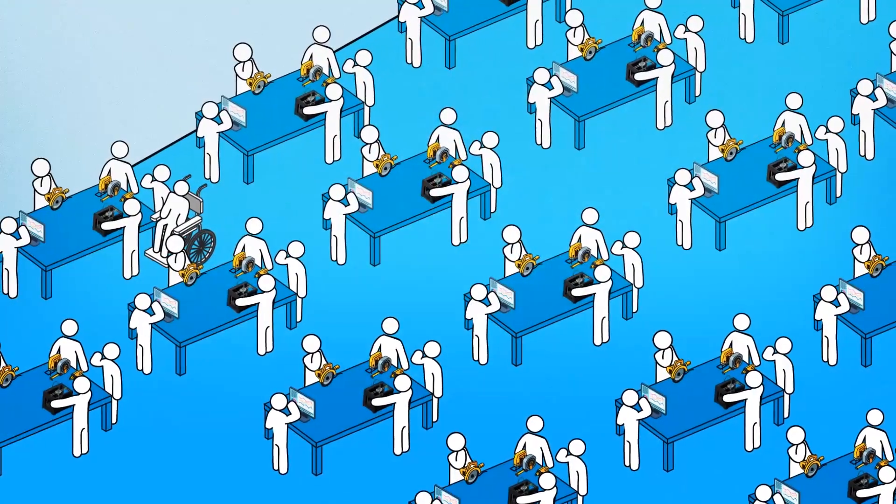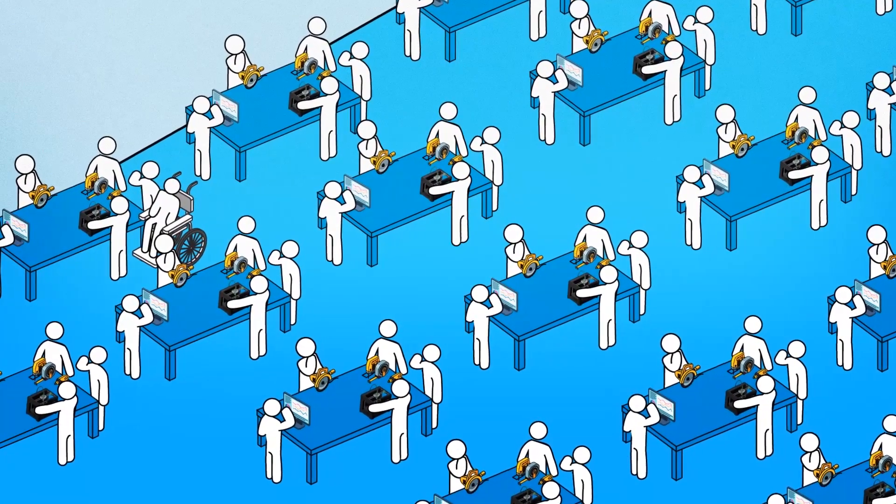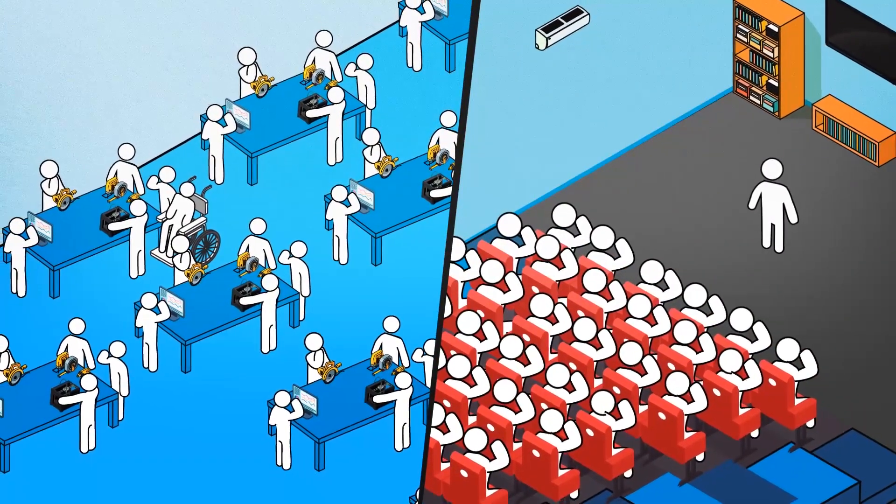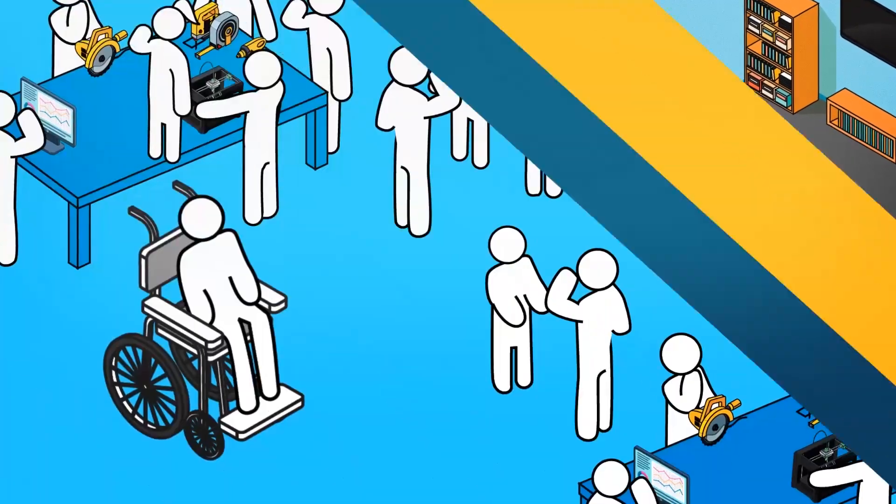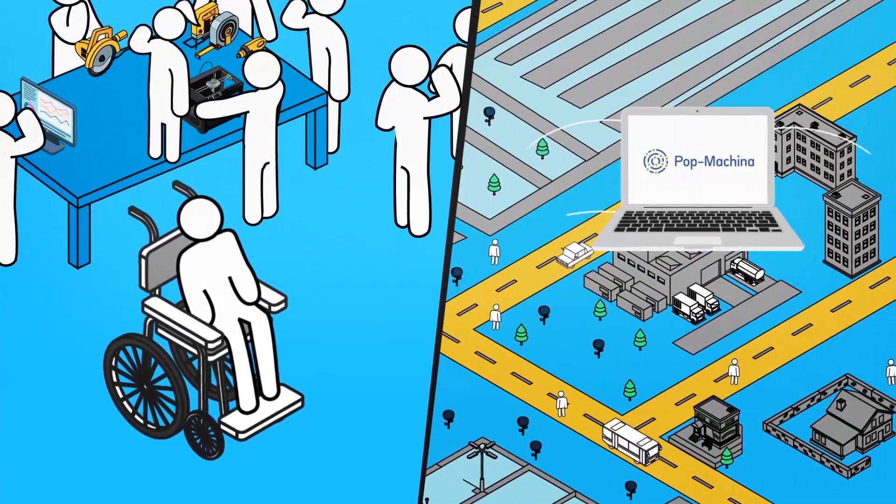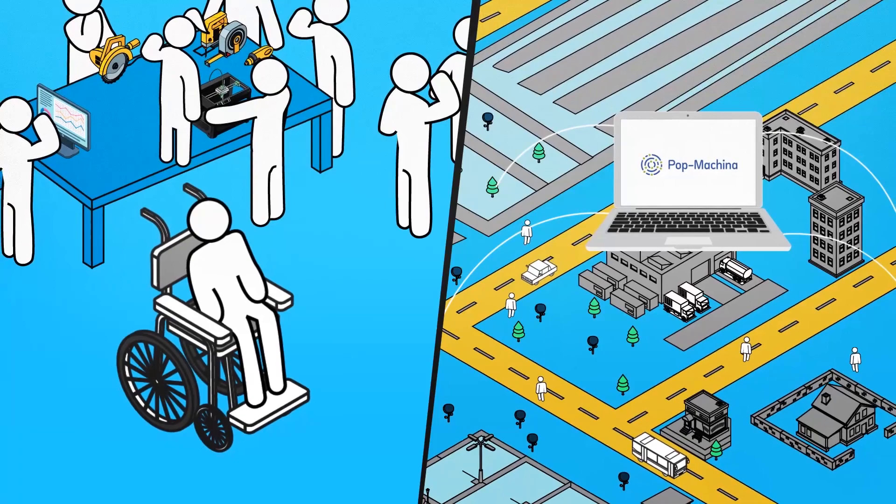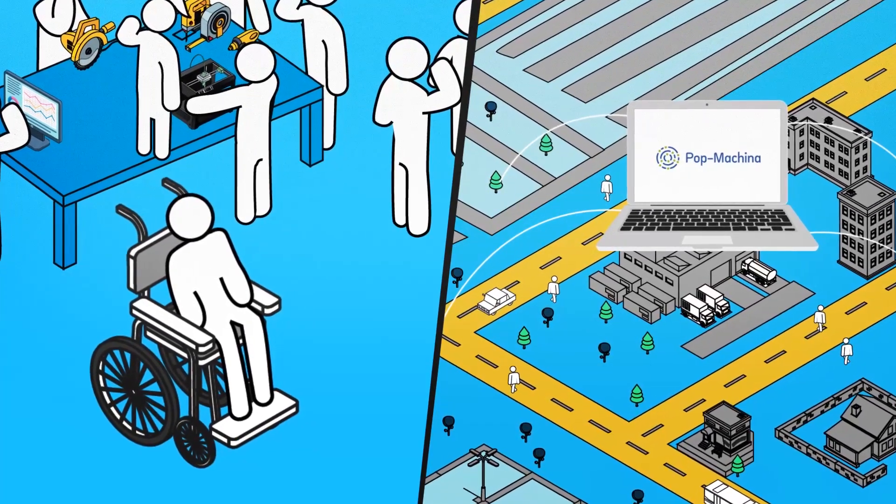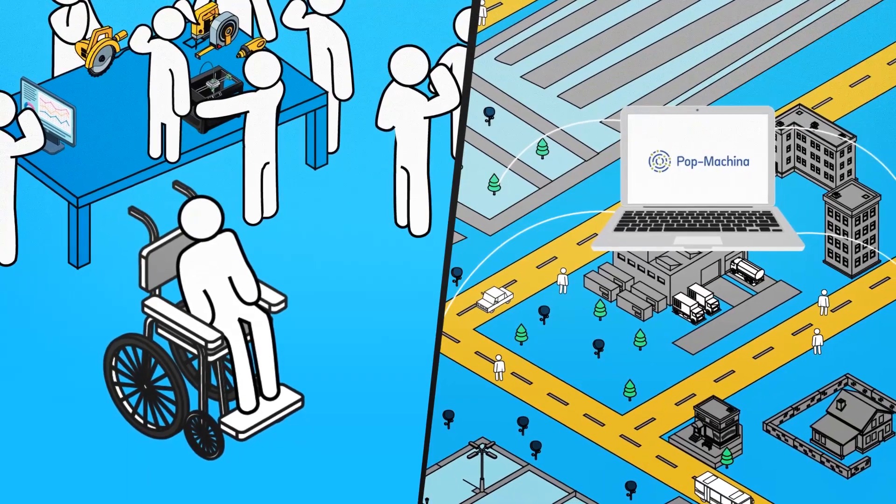For this purpose, Pop Machina sets up maker spaces in underused locations and equips them for manufacturing and creative activities, provides training to develop people's skills, helps makers transform their projects into businesses, connects communities through an online platform and much more, all the while putting special focus on including groups that are often underrepresented in fabrication activities.